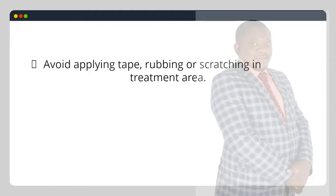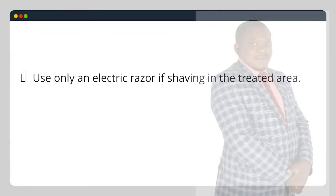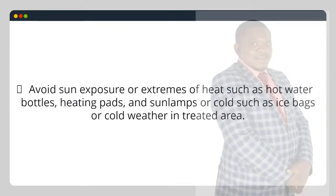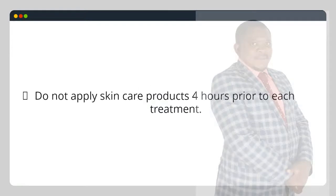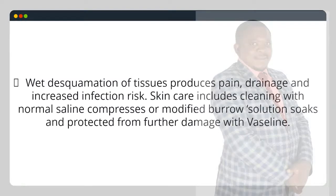Avoid applying tape, rubbing or scratching in the treatment area. Wear loose-fitting soft clothing such as lightweight cotton garments over the treated skin to avoid traumatizing the skin; avoid wearing girdles and belts over treatment fields. Use only an electric razor if shaving in the treated area. Avoid swimming in chlorinated or salt water during treatment. Avoid sun exposure or extremes of heat such as hot water bottles, heating pads and sun lamps, or cold such as ice bags in the treated area. Do not apply skin care products 4 hours prior to each treatment. For treatment of the breast, do not wear a bra when possible; avoid underwire bras. Wet desquamation produces pain, drainage and increased infection risk; skin care includes cleaning with normal saline compresses or modified Burow's solution soaks and protected from further damage with Vaseline. Hemorrhagic cystitis.